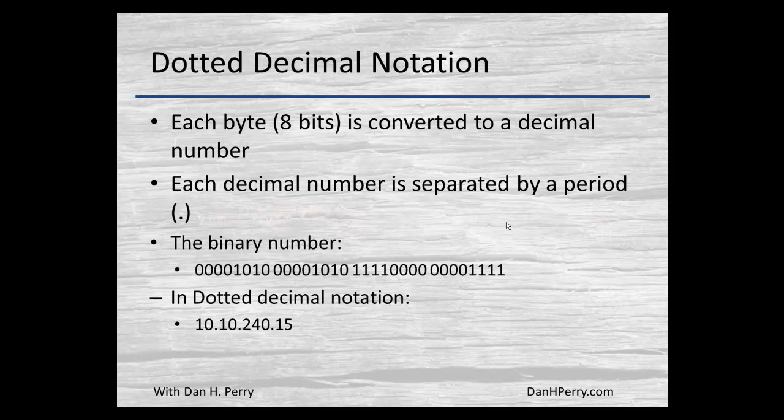So if we take the binary number shown on this slide and we convert each of those bytes to a decimal number and then separate each of them with a period or a dot, we get 10.10.240.15, and this is the dotted decimal notation that we will be using for TCP IP addresses.